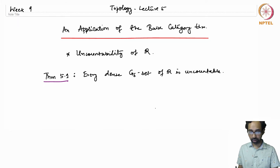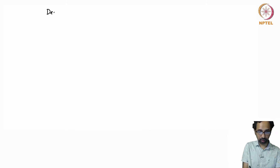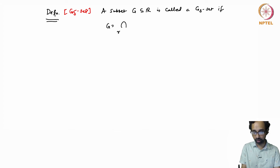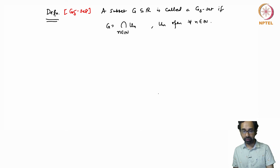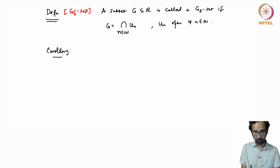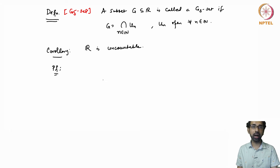Let me first define what a G-delta set is, and we will see how this theorem implies the uncountability of R. A subset G of R is called a G-delta set if G can be expressed as the countable intersection of open sets — that is, G equals the intersection of Uₙ where each Uₙ is open for all n. Every countable intersection of open sets is called a G-delta set.